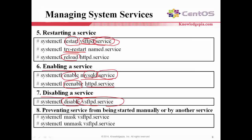To prevent a service from being started manually or by another service, we can use the mask and unmask actions. Using systemctl mask on vsftpd will prevent it from starting manually or being started by other services. To remove this restriction, use systemctl unmask.